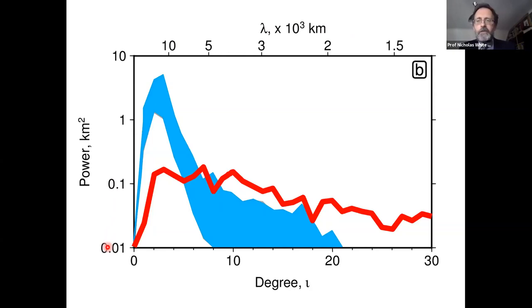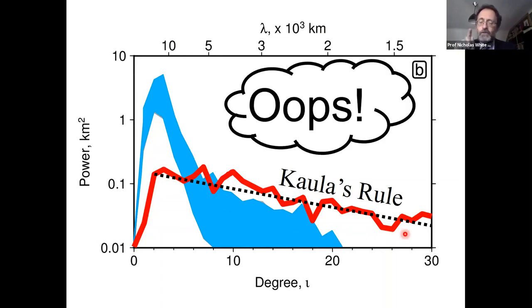This is power on the y-axis as a function of degree, or wavelength along the top, or wave number, which is 2π over λ. Power is simply the amplitude of dynamic topography that we observe squared. The red line is the observed spectrum of dynamic topography, and it obeys Kaula's rule, which is to do with the gravity of the Earth.